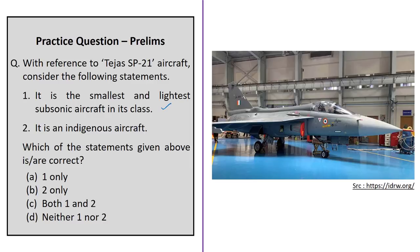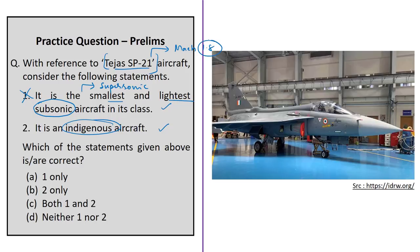In the practice question on Tejas SP-21, two statements are given. Statement one says it is the smallest and lightest subsonic aircraft in its class — this is incorrect, as it is supersonic with a maximum speed of Mach 1.8. Statement two says it is an indigenous aircraft — this is correct, developed by HAL and ADA as part of the LCA program. Therefore, only statement 2 is correct, making option B the right answer.